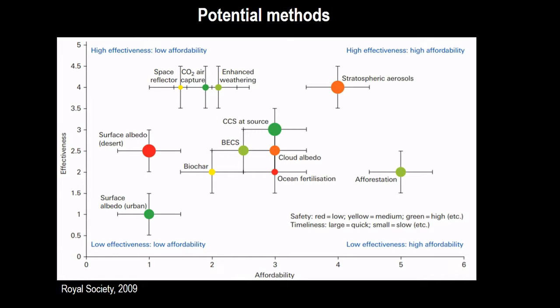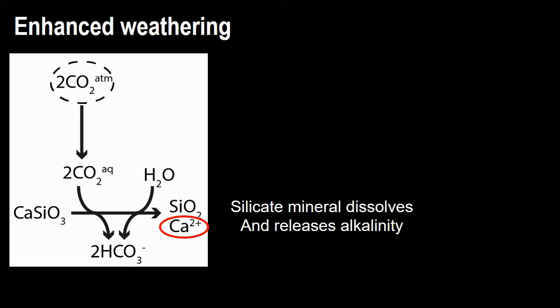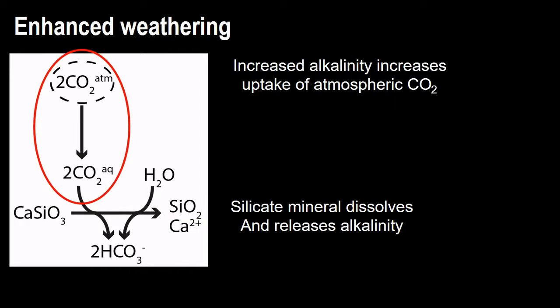There's a wide range of potential methods you can use to temper the CO2. One of the most promising is enhanced weathering, which means if you dissolve or weather silicate minerals, you will increase the alkalinity of the ocean. If you increase the alkalinity, more CO2 will be taken up from the atmosphere and sequestered in the ocean.